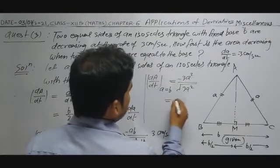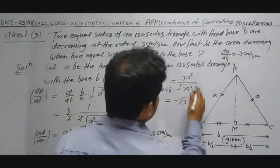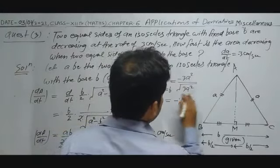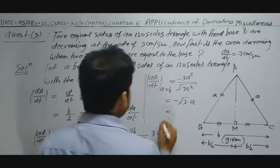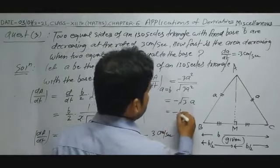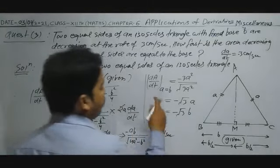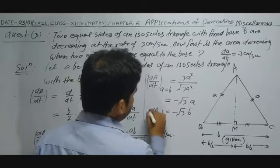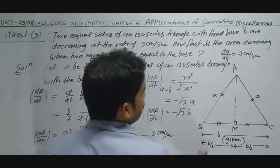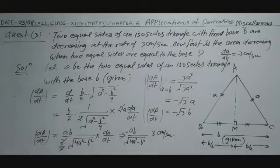The √(3a²) = a√3. So dA/dt = (a × a)/(a√3) × (−3) = −a × 3/√3 = −√3 a. Since a = B, the result is −√3 B. This is the rate of decrease of area.